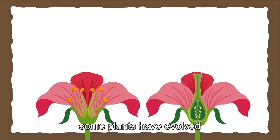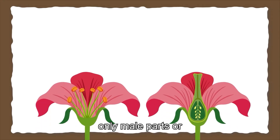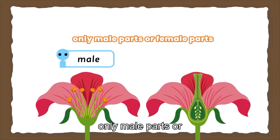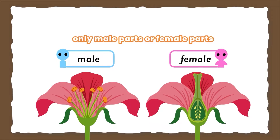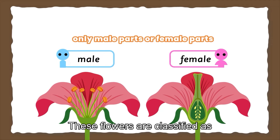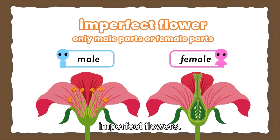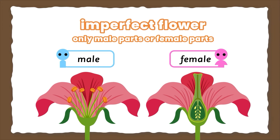However, some plants have evolved to produce flowers with only male parts or only female parts. These flowers are classified as imperfect flowers.